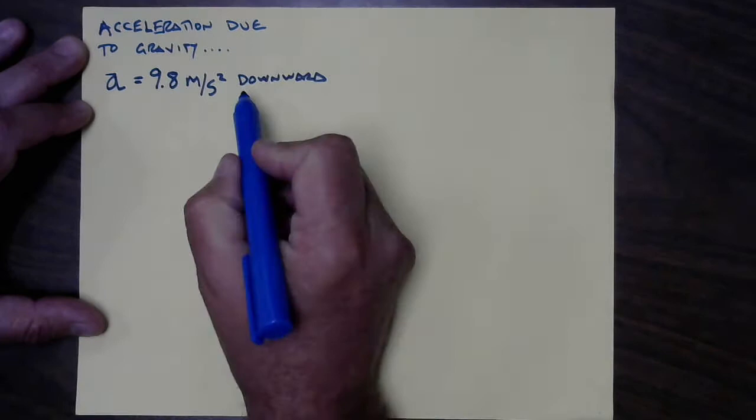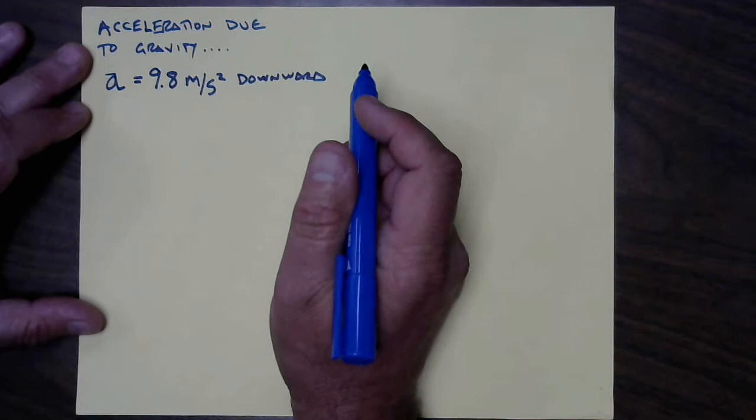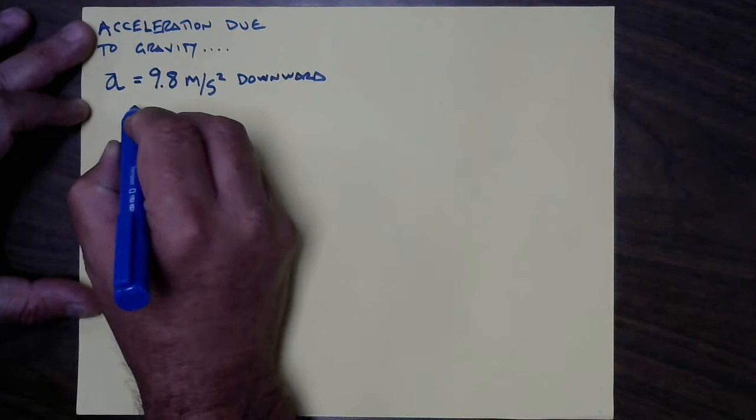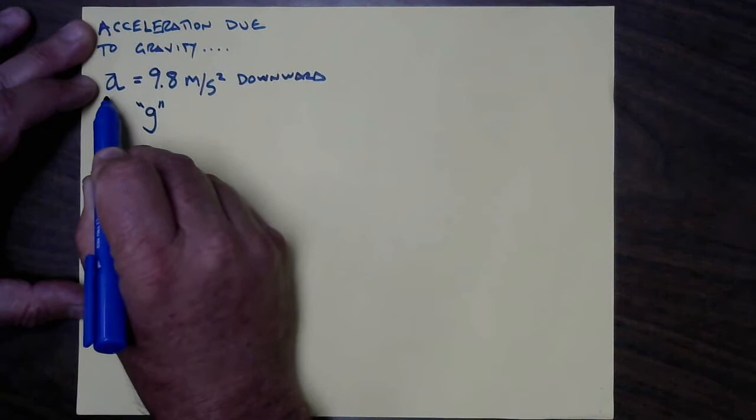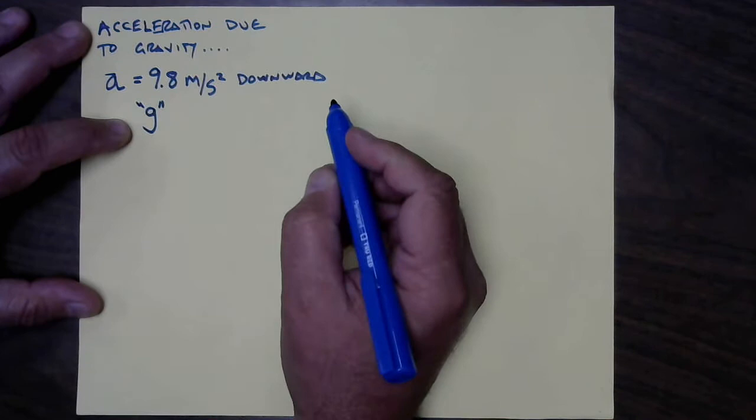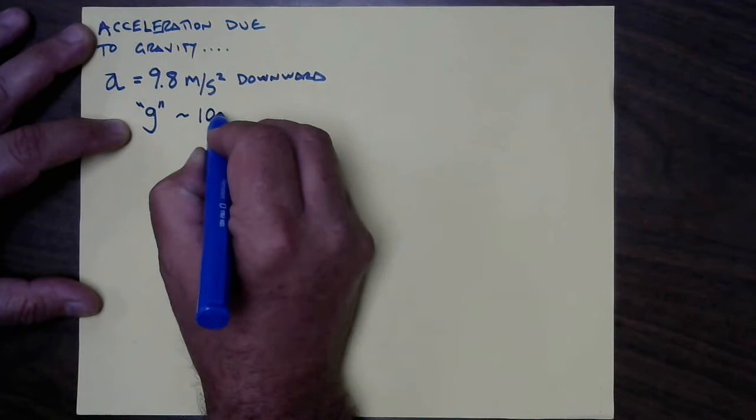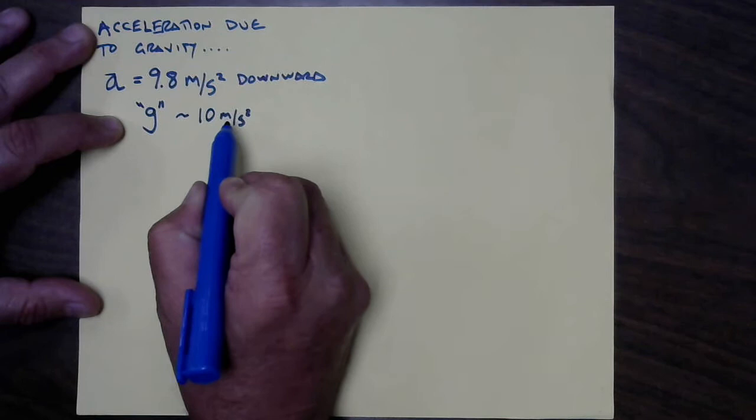Downward is actually a definition — it's the direction that gravity pulls. So in Australia, the direction that gravity pulls is different than in Los Alamitos. This number is so important that it gets its own letter: a lowercase 'g' is often used in place of lowercase 'a' when representing acceleration due to gravity. This 9.8 meters per second squared is 1g. You can use approximately 10 meters per second squared for quick one-sig-fig calculations.